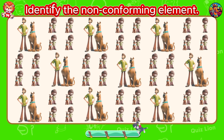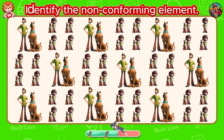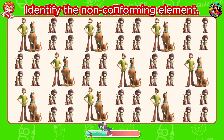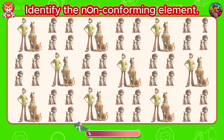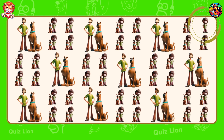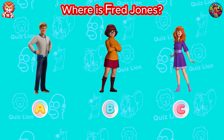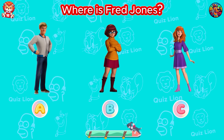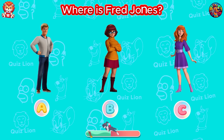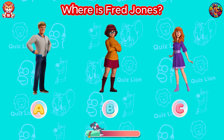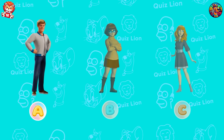Identify the non-conforming element. You have an incredible ability to excel in everything you do. Where is Fred Jones? Fred Jones is answer A.